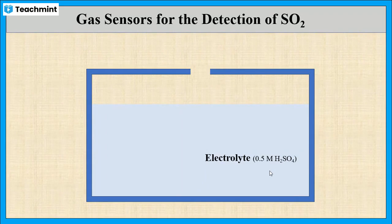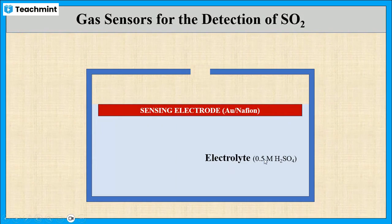Then it is immersed with three electrodes. The sensing electrode or working electrode is made up of gold coated with nafion. This will facilitate the redox reaction of analyte gas on the surface.